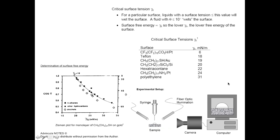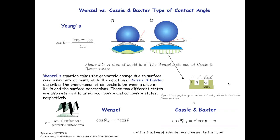Some surfaces do not wet very well — they are what we call super hydrophobic. Young's equation can be corrected based on roughness and the presence of trapped air between surface features. The Wenzel correction accounts for surface area changes due to rough surface geometry. The Cassie and Baxter approach calculates a correction based on roughness and the fraction of solid not wetted by liquid due to trapped air. The Cassie-Baxter phenomena has been used widely in creating super hydrophobic surfaces, as seen in insect striders and lotus leaves.